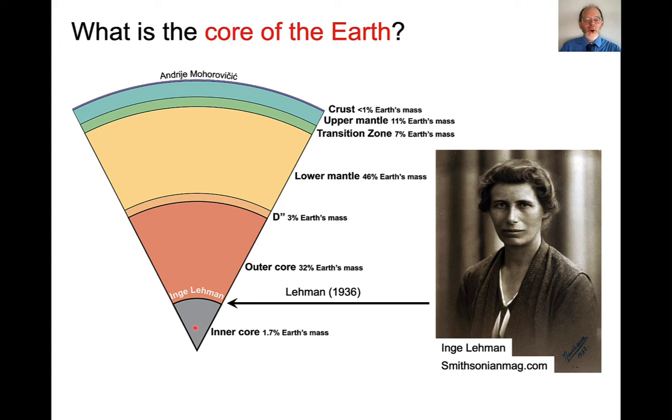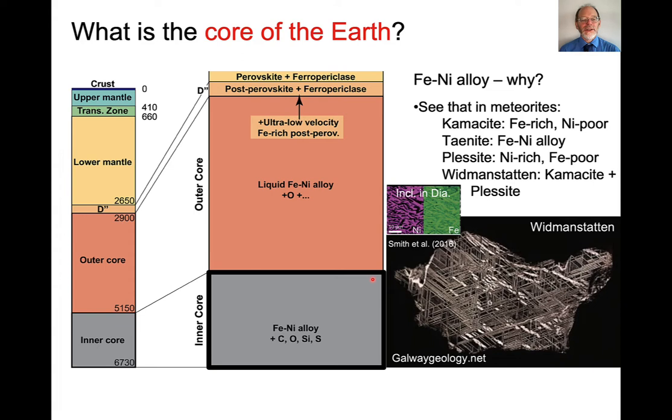So let's talk about the core. As you know, the Earth has a core. It has an inner solid core and an outer liquid core. A researcher named Inge Lehmann is the person who first discovered the occurrence of the inner core. This was based on the types of shadow zones that are observed after large earthquakes. And we think that this material is made up of iron nickel alloy. Now, why do we think that?